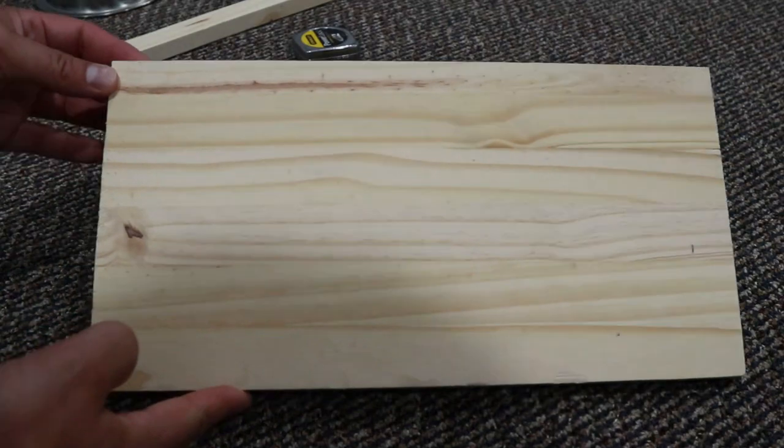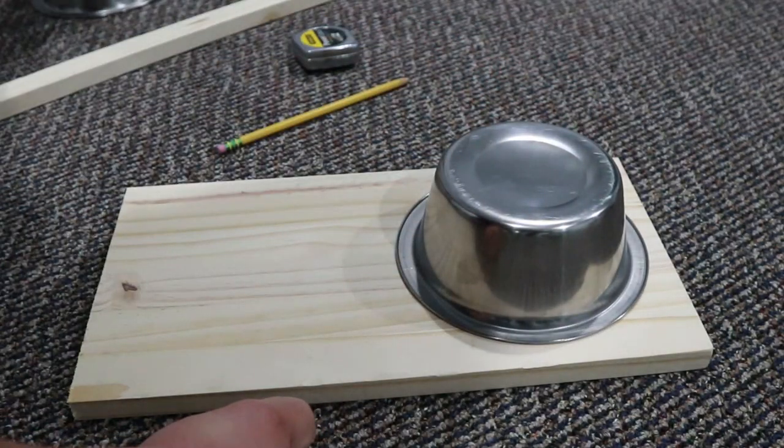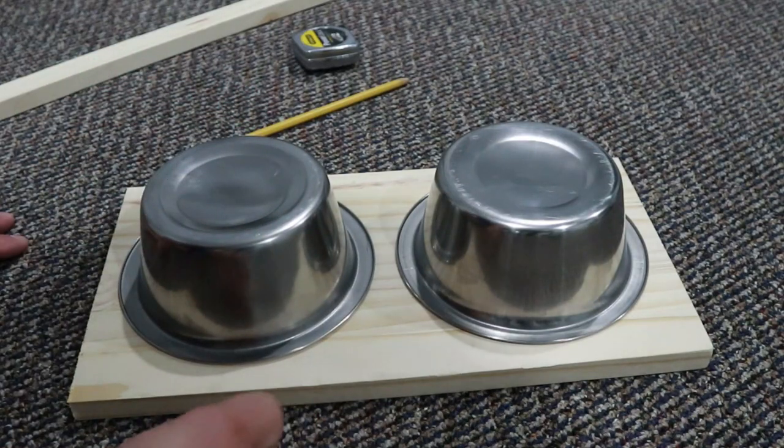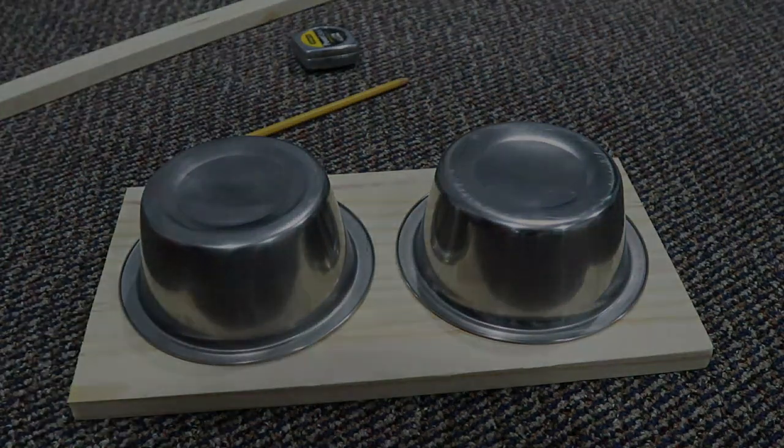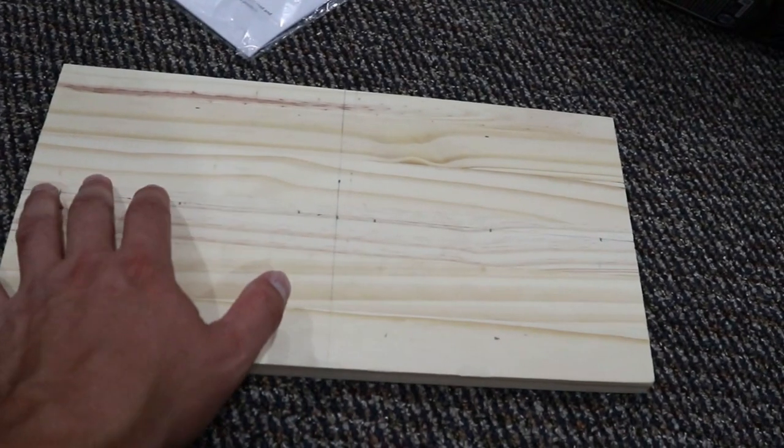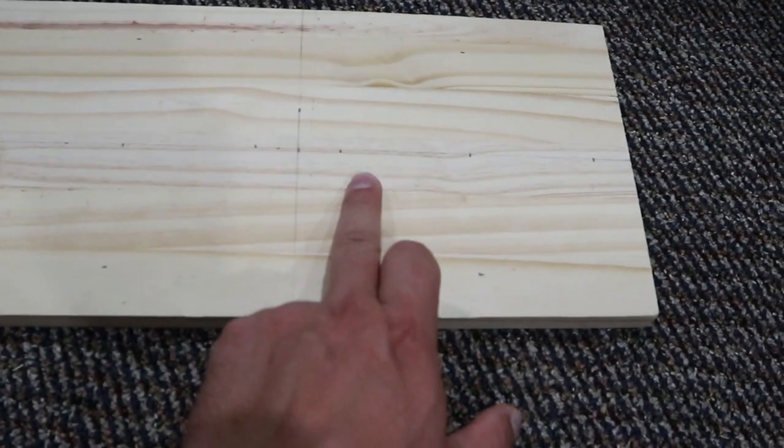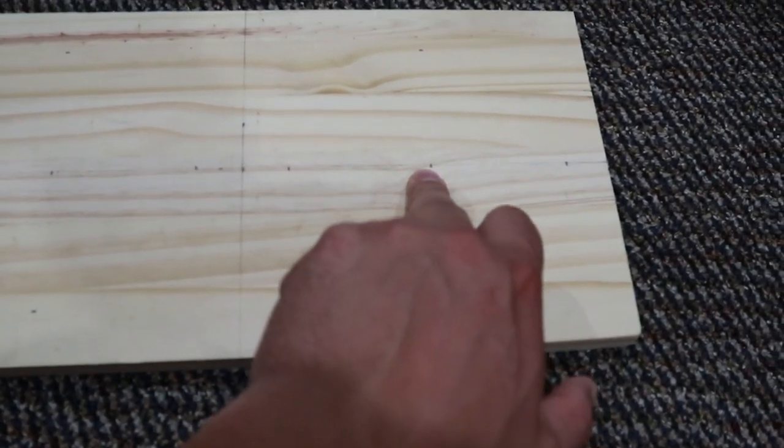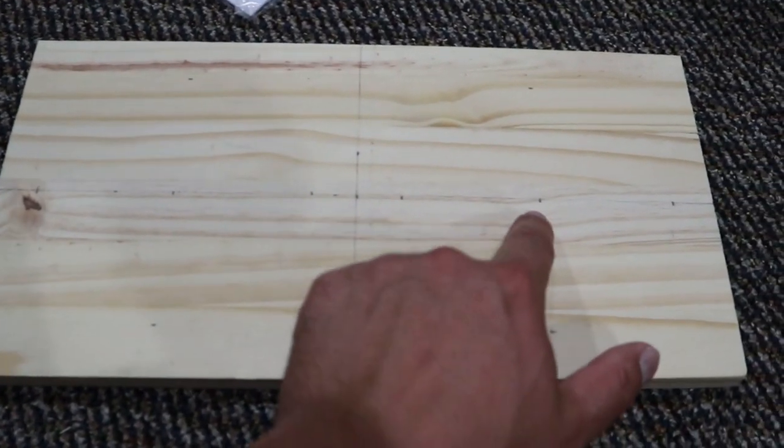So I got the basic top done. I just got to figure out where I want these, drill some holes, cut it out. What I did was found the center of this whole piece, which is right there, cut it in half, which is the center of each square, right there and there.